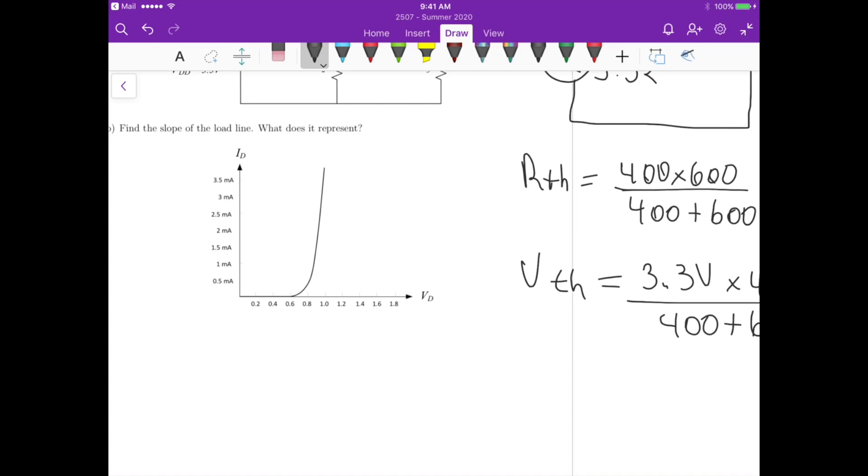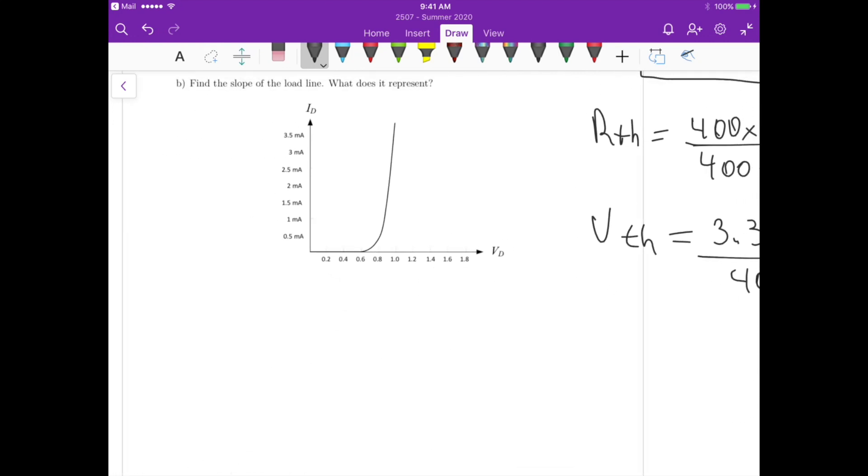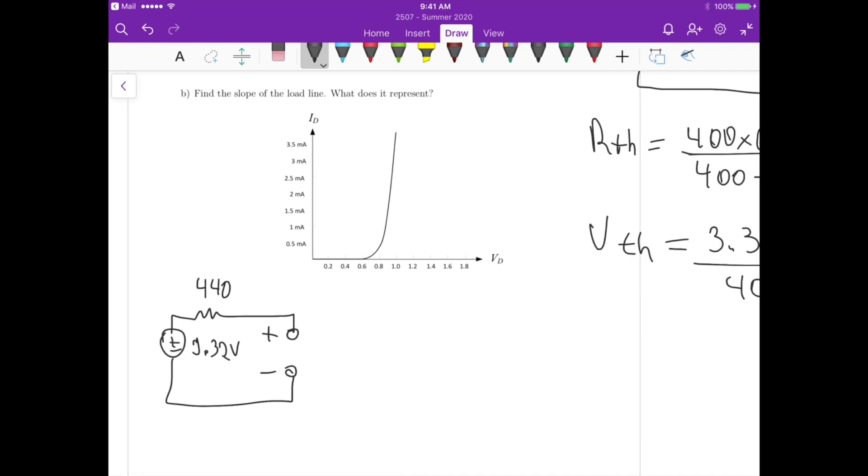First, the value of VD for the load line, for ID equals to 0, VD must be equals or the voltage across the diode must be VTH. So let me draw this condition so you understand what I'm saying. So for no current flowing through the diode, suppose the diode is here, the voltage VD across the diode, this is 440, this is 1.32 volts. If there's no current for the condition where ID equals to 0, the voltage across the diode VD here equals to 1.32. So it's around this region here.